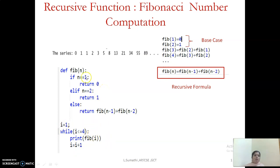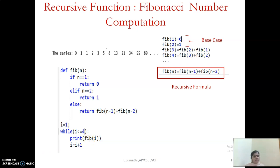Now we will write a main program to call our user-defined function to generate the series. If I want four numbers in the series, I have to call fibonacci(1), fibonacci(2), fibonacci(3), and fibonacci(4). I start from i=1 and repeat until i reaches 4, then print the Fibonacci number. Calling fibonacci(1) returns the first number in the series; calling fibonacci(2) returns the second number, and so on.